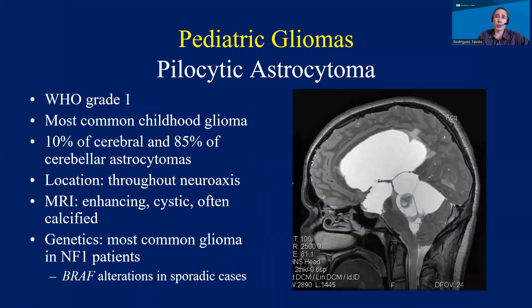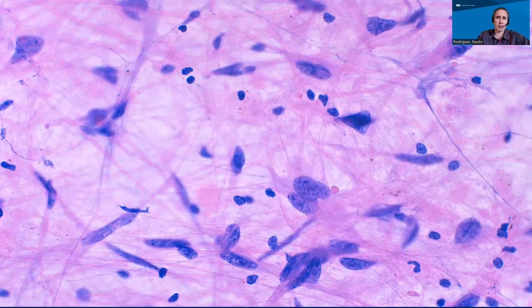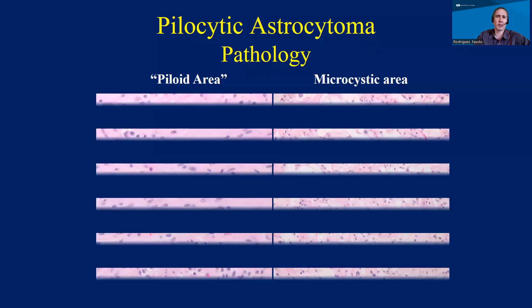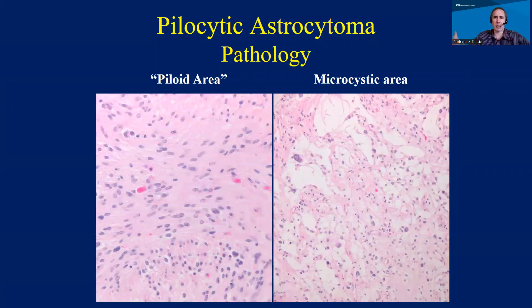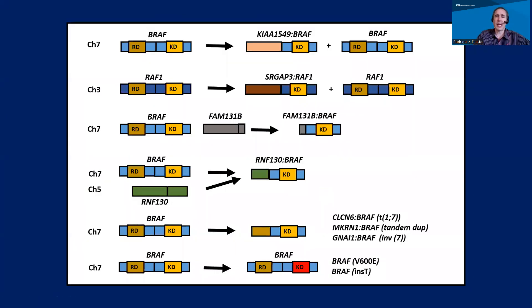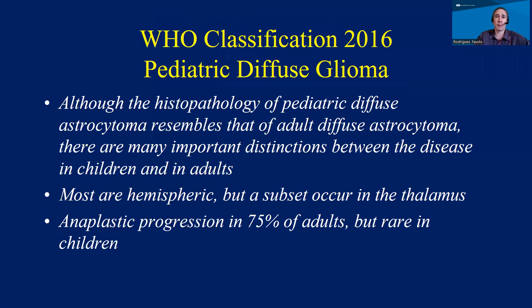Pilocytic astrocytomas are grade 1, so in theory, depending on the anatomic location, they can be completely resected. Pilocytic astrocytoma is the most common type of childhood glioma and can be encountered across the CNS. Cytologically, you have all these bright processes — tumor cells making these processes. They tend to have what we call a biphasic appearance: areas that are compact and areas with a lot of microcysts or little holes. At the genetic level, they also have alterations, particularly in a gene called BRAF, which explains some of the biology, and we test for these in some of these pediatric tumors.